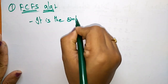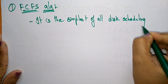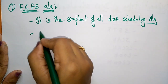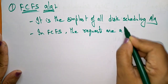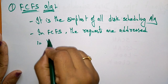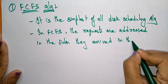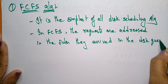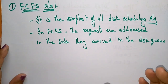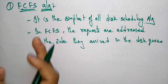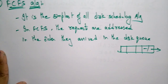It is the simplest of all disk scheduling algorithms. In FCFS, requests are addressed in the order they arrive in the disk queue. The disk queue is used to store the different requests made by the processor. Whatever order they arrive, they are placed in the queue and served first come, first out.